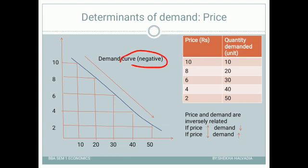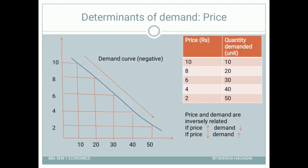What is the nature of the demand curve? It is negative in nature, because the curve is moving downward from left to right. As the curve moves downward it is called a negative curve. So the nature of the demand curve is negative.